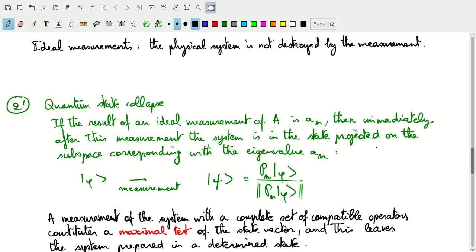If this is a non-degenerate eigenvalue, then the system will be projected on an eigenvector corresponding with that eigenvalue.